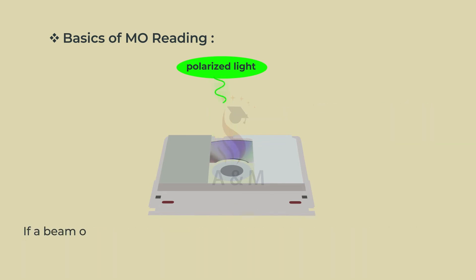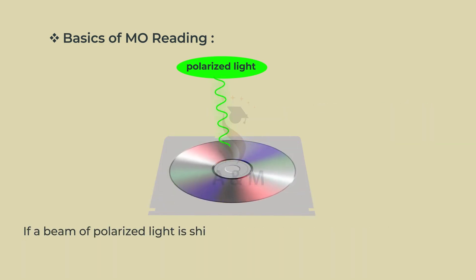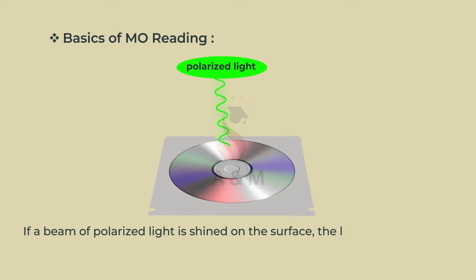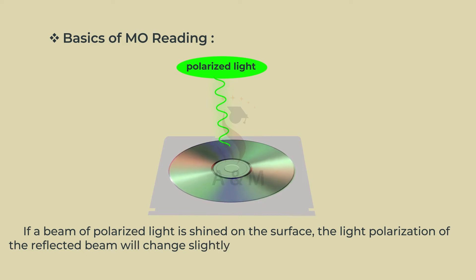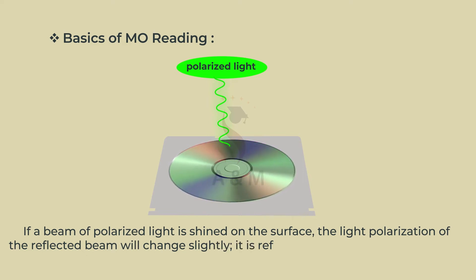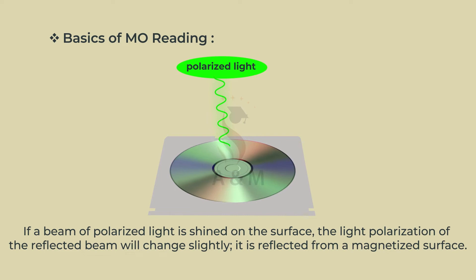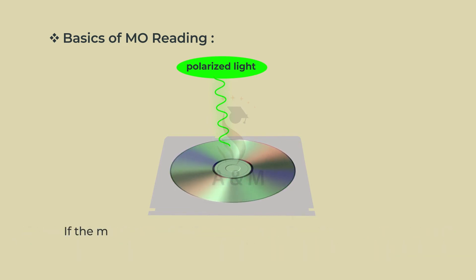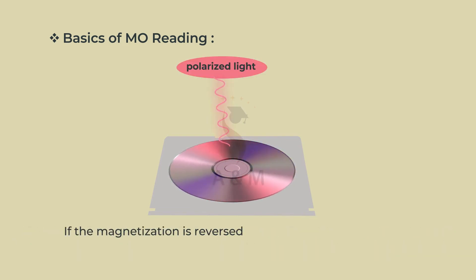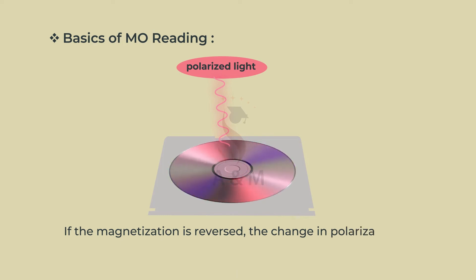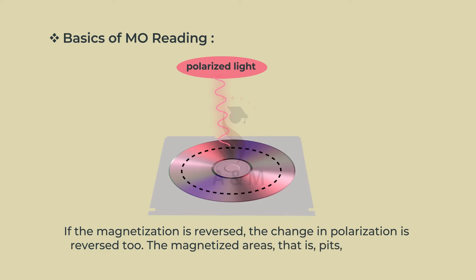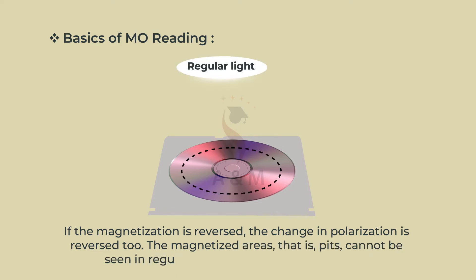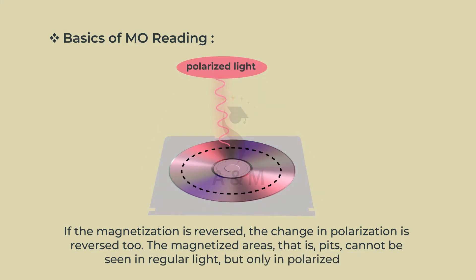If a beam of polarized light is shined on the surface, the light polarization of the reflected beam will change slightly when it is reflected from a magnetized surface. If the magnetization is reversed, the change in polarization is reversed too. The magnetized areas, i.e. pits, cannot be seen in regular light but only in polarized light.